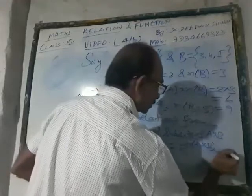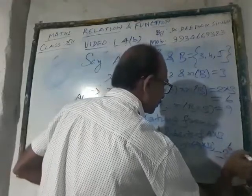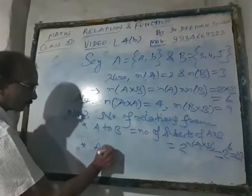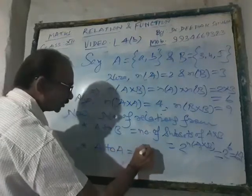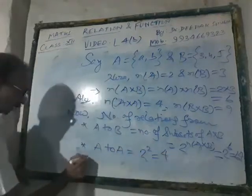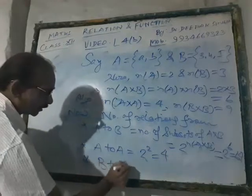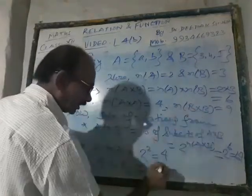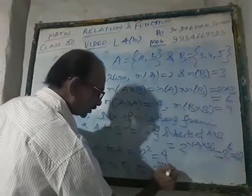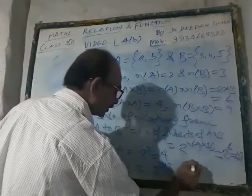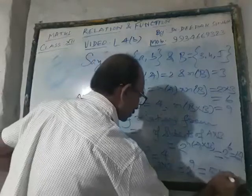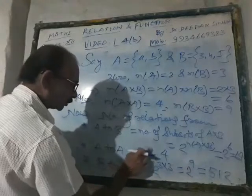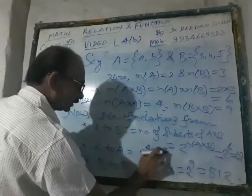Now the number of relations from A to B equals the number of subsets of A cross B, which is 2 to the power n(A cross B) = 2 to the power 6 = 64. And the number of relations from A to A equals 2 to the power n(A cross A) = 2 to the power 4 = 16.